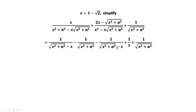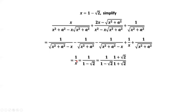We put a negative sign here. This one and this one are cancelled out. This one negative, this one positive, are cancelled out. We only have this term left, one over x. x equals one minus square root of two. We replace x by one minus square root of two. Both numerator and denominator times the conjugate of this denominator. Now we have the final answer, which is negative one minus square root of two.